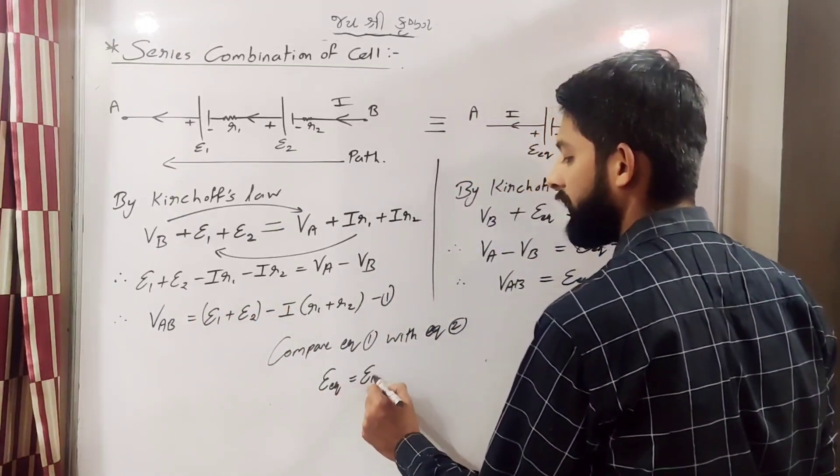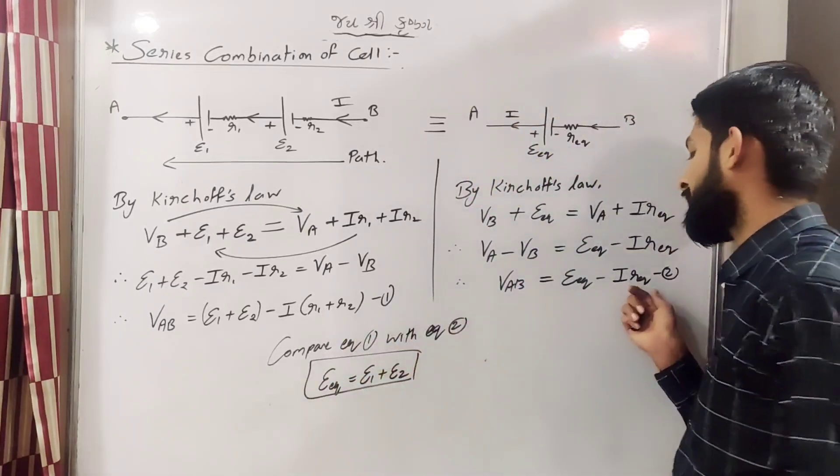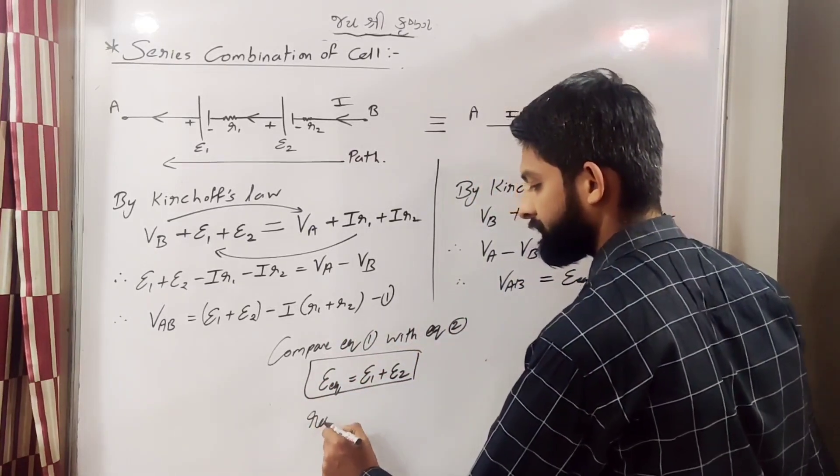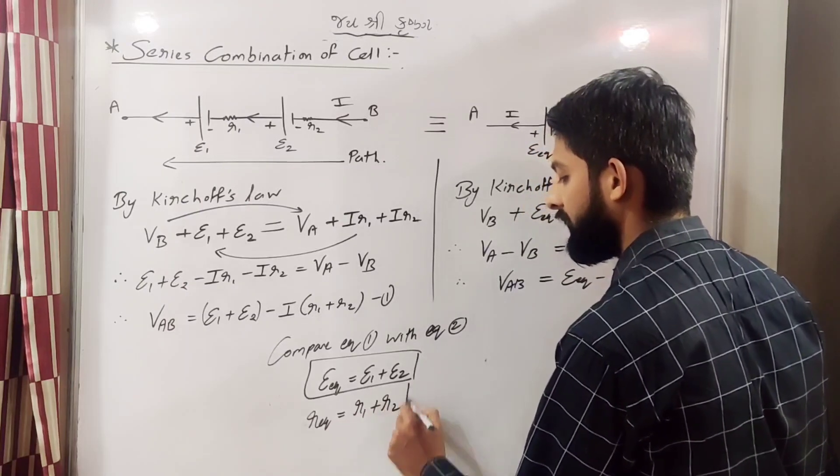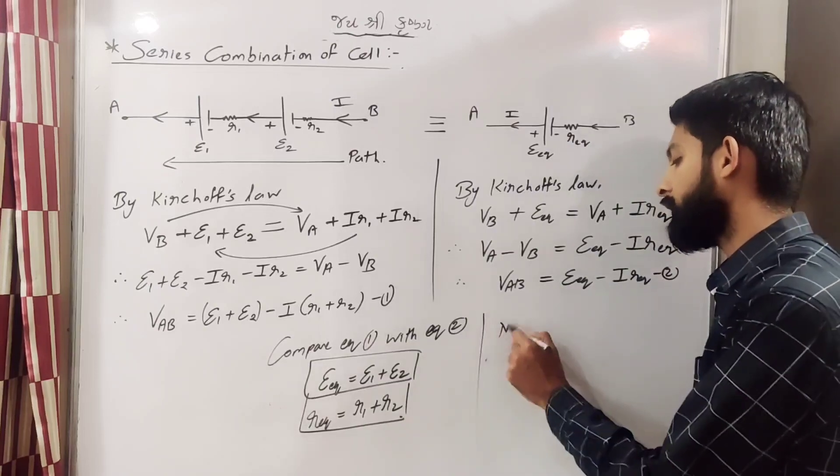So here aap epsilon equivalent kitna hoga, that will be equal to epsilon 1 plus epsilon 2. Aur R equivalent kitna hoga, r1 plus r2. Clear? Record yaha pe note likhlo.